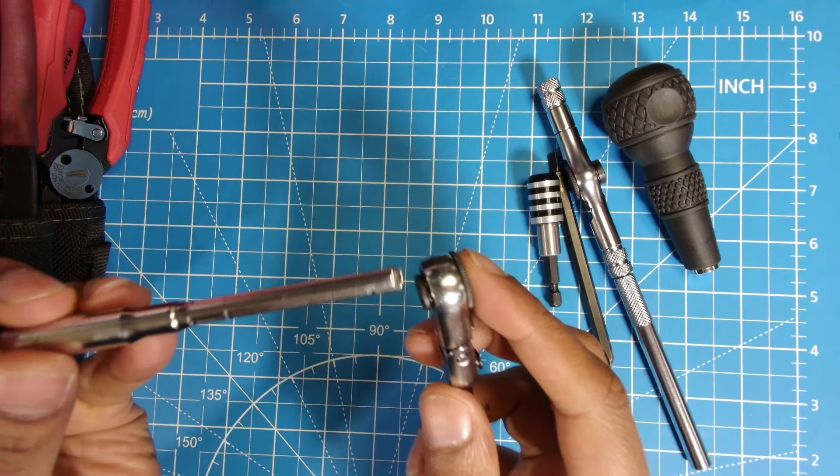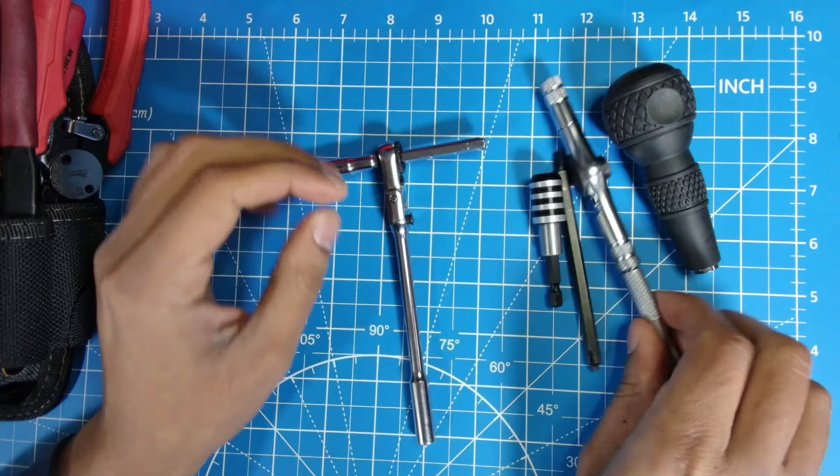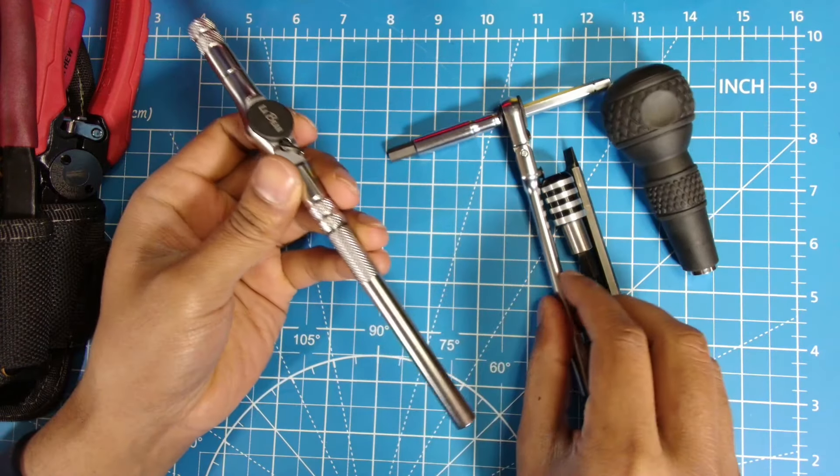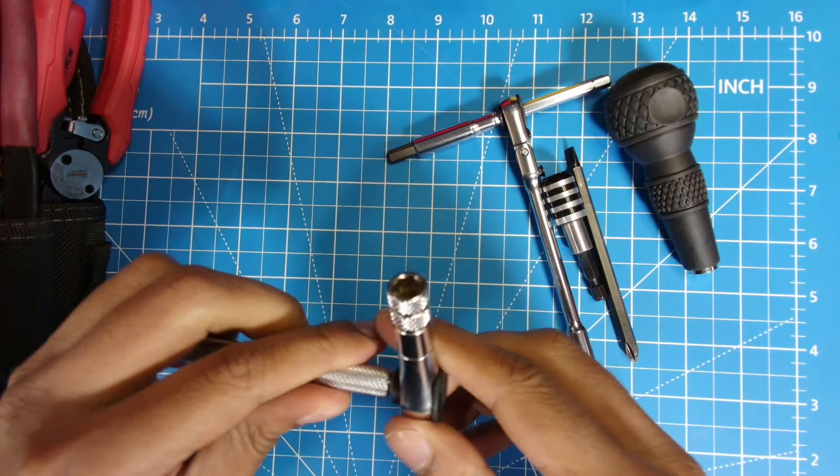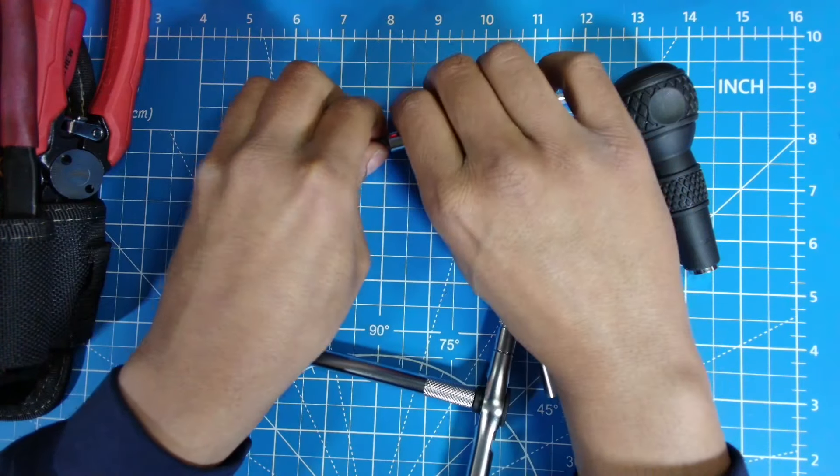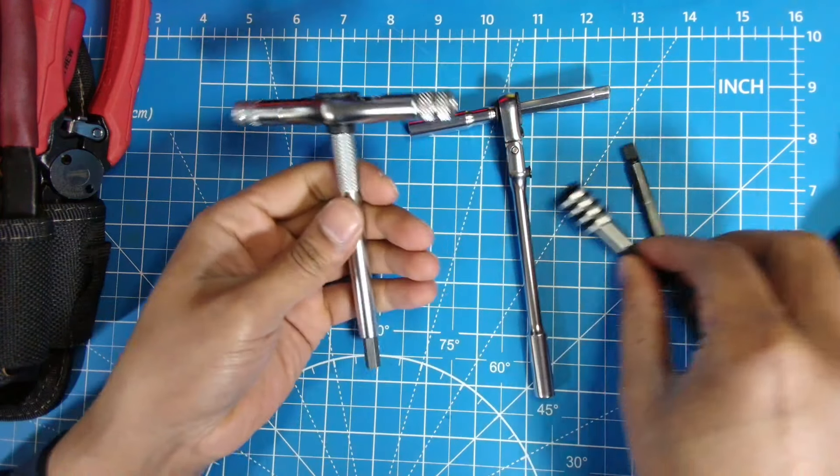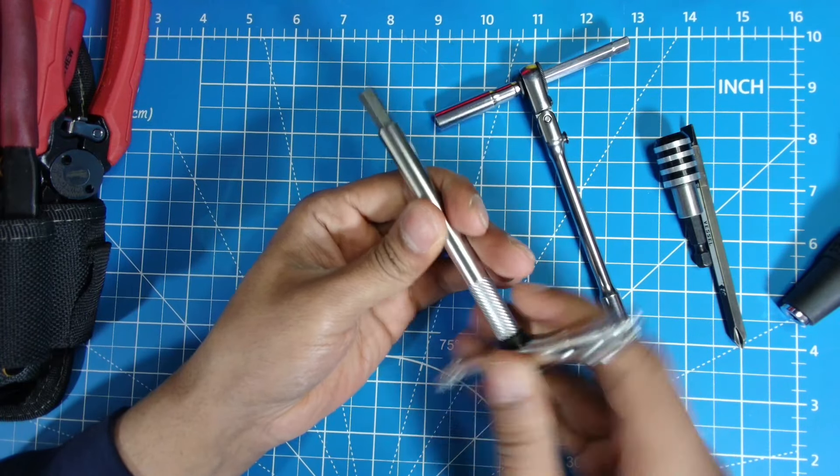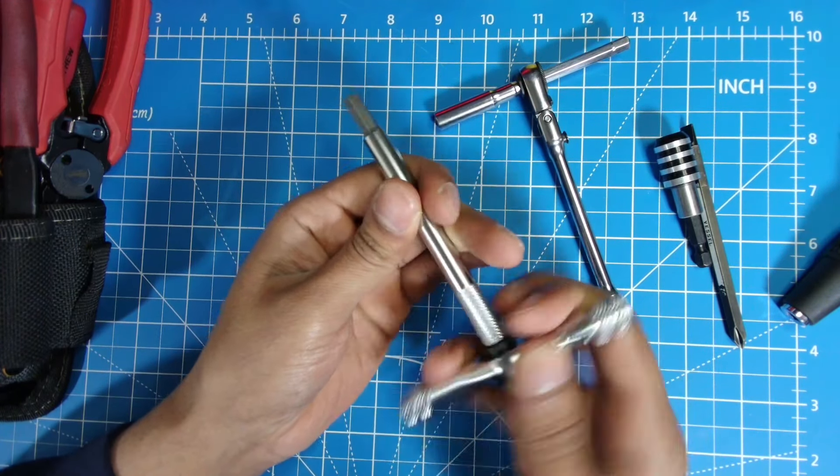So the second driver I'll show you is my LaBear driver that I keep in here with this. The main use that this gets is the T bar handle use. So I take a bit, take it out of that, put it in here. So now I have a T bar just like my Vim ratchet. Difference is it's a ratcheting T bar and this is a very smooth ratchet as well.